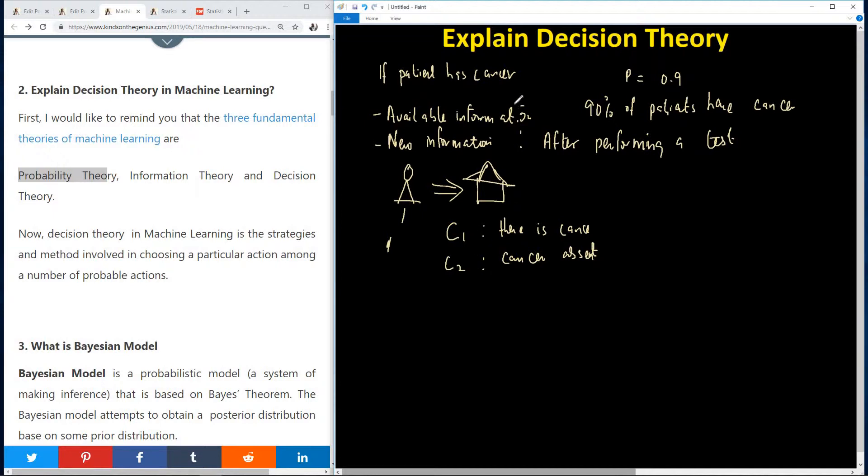So the decision is to assign the patient into one of these two classes. So the available information is the probability that the patient have cancer, P of C1. And that is already available. So we can actually say P of CK for K equal to 1 or 2.